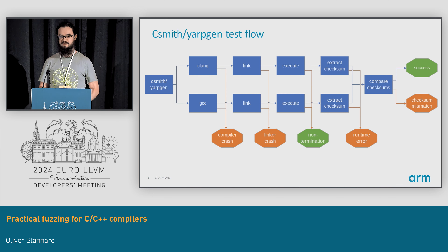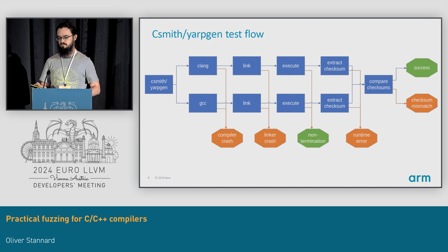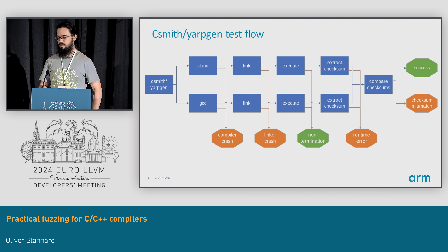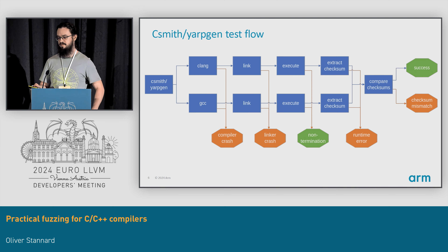The typical way to use these is to generate one source file, compile, link, and execute it with two toolchains, or possibly the same toolchain with different options. If the compiler or linker crash, that's obviously a bug. If the execution times out after a short timeout, you can't really tell anything useful, because as I said the program might not terminate. And if either run didn't print a checksum — printed an assertion or a segfault or something — that's a bug. If they both printed checksums and they differ, again that's a bug.